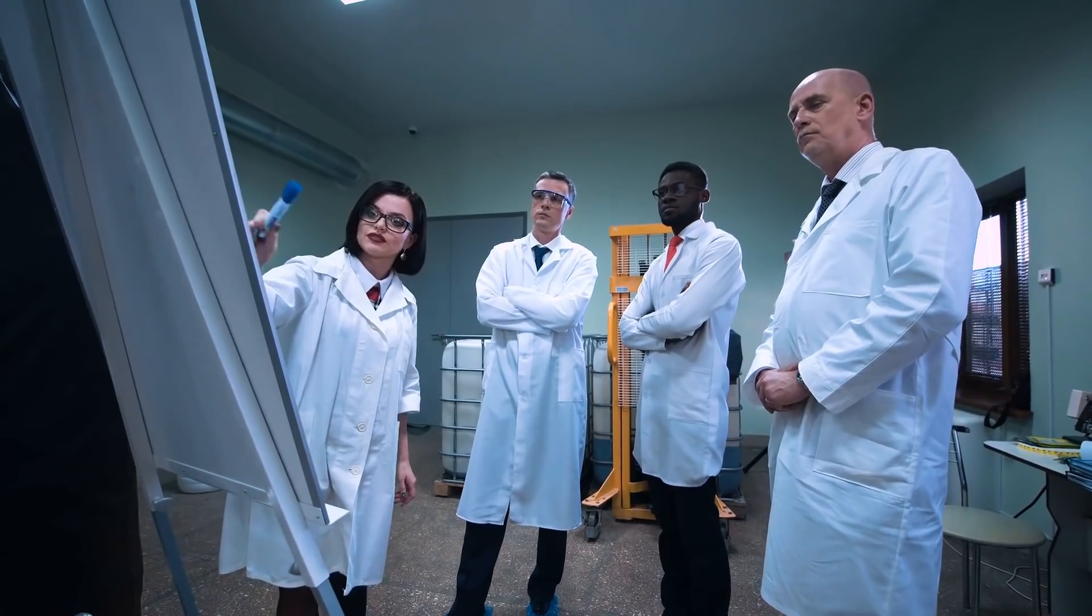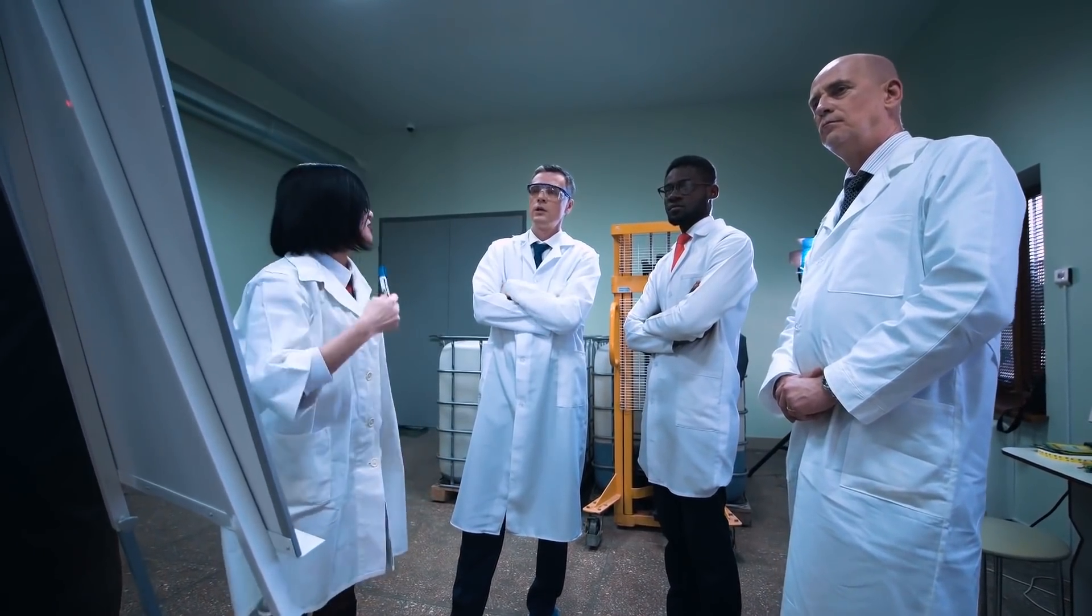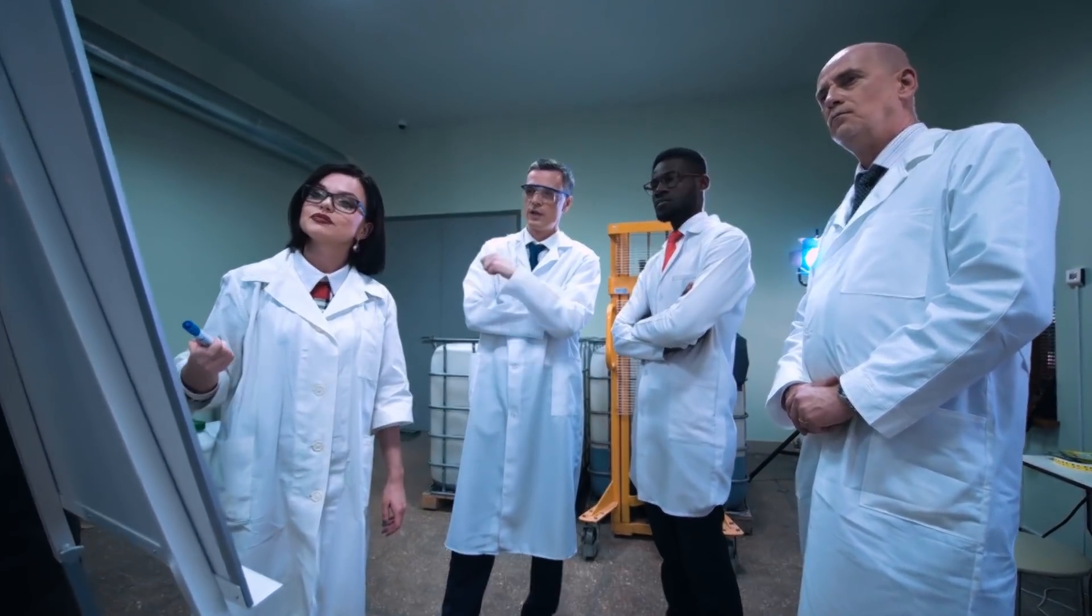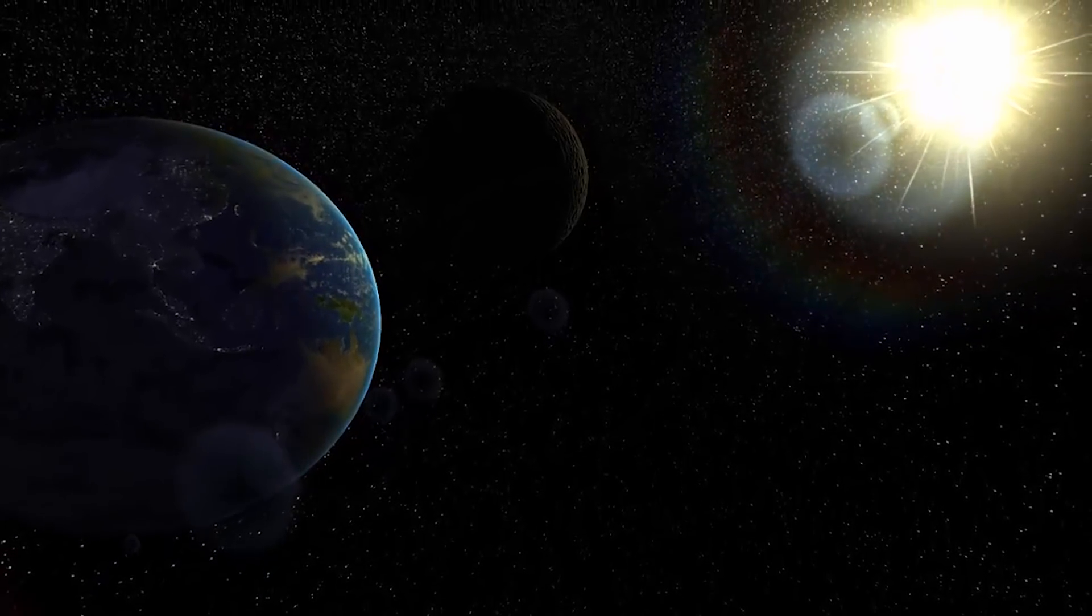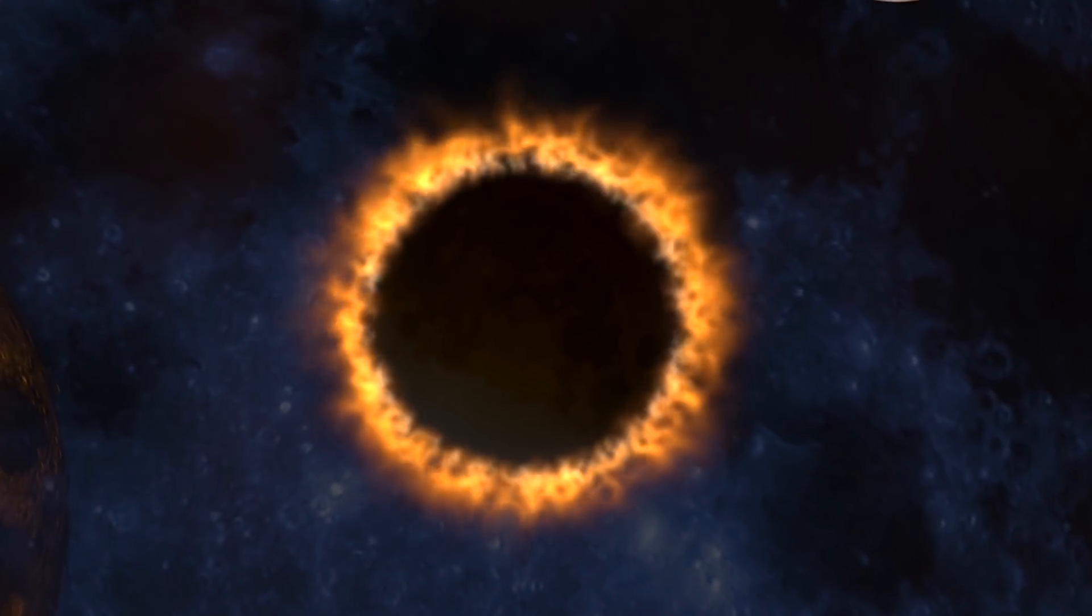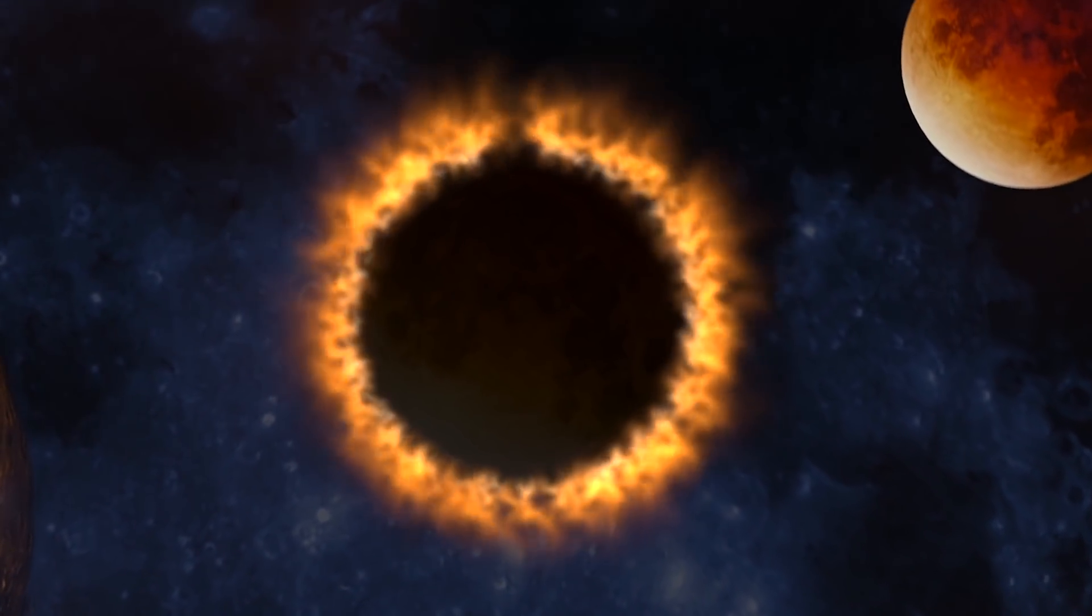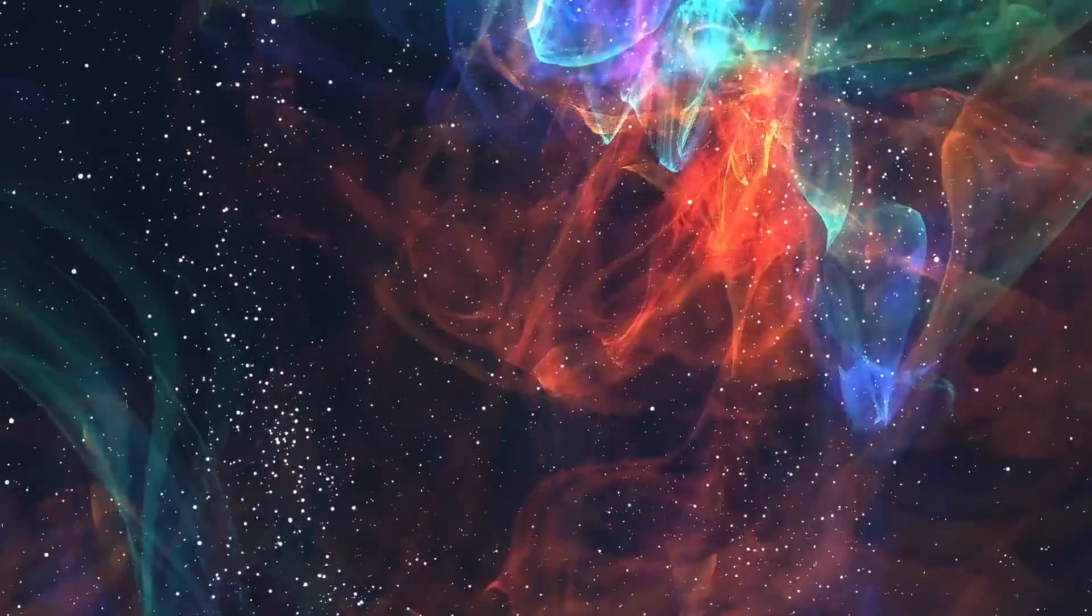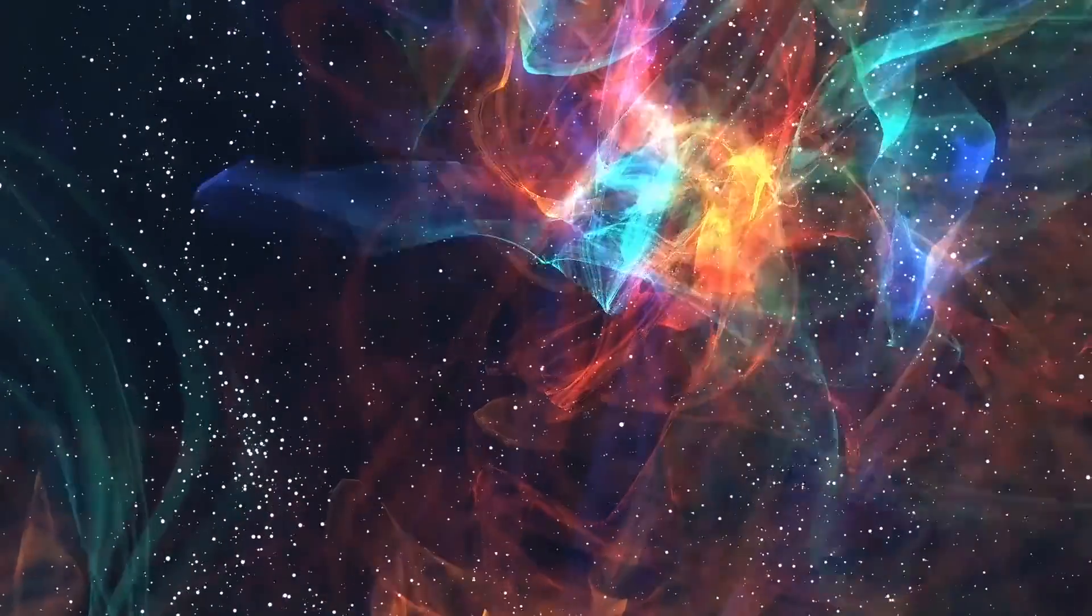To truly understand the point of this piece, we need to go back to the earliest days of astronomy, where many people believed that the Earth was the center of the universe and everything revolved around it. Then we slowly realized the truth, that we orbited around the sun, and the sun was just one piece in a very big cosmic puzzle.